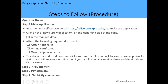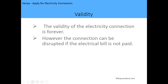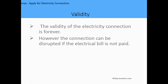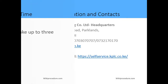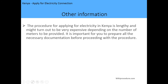The fees depend on the distance from the existing power connection, the power requirements, and the number of meters needed, so the fees are variable. The validity period for the electricity connection is permanent; however, the connection can be disconnected if the electricity bill is not paid. The processing time can take up to three months. The KPLC headquarters are located at Stima Plaza, Parklands, Nairobi, Kenya. The website is www.kplc.co.ke and the self-service portal is at self-service.kplc.co.ke.